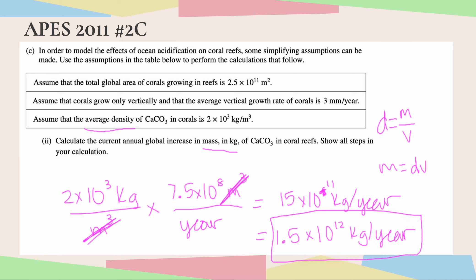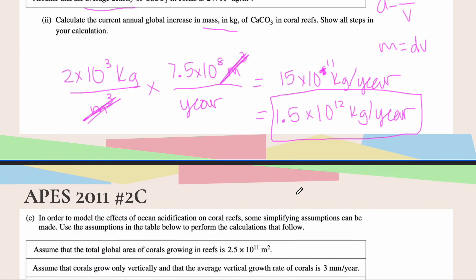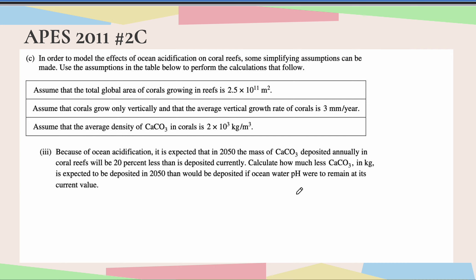So now that I've corrected that, this would become 1.5 times 10 to the 12th kilograms per year. There we go. Awesome. Okay, great. Let's move on to part three.